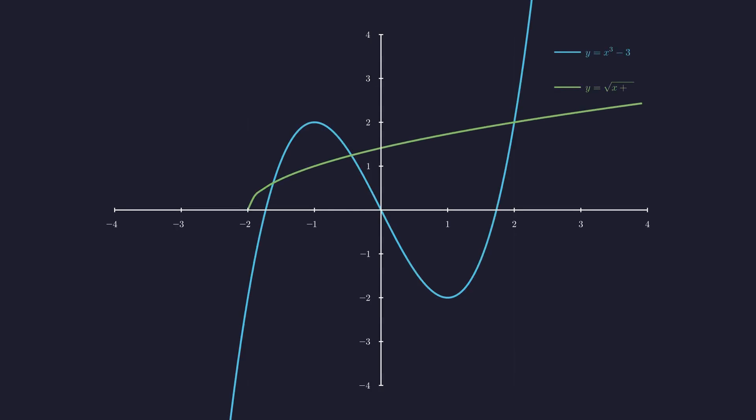The blue curve shows x cubed minus 3x. The green curve is the square root of x plus 2. But notice something important about its domain. The square root is only defined when x plus 2 is non-negative, which means x must be at least negative 2. This immediately rules out a huge portion of the number line.